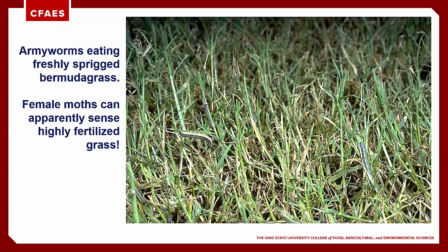African, fall, and lawn armyworms relish dining on turf that has been recently sprigged, seeded, or sodded, especially when areas have been heavily fertilized. We now suspect that adult female moths have the ability to sample the guttation water produced by turf in order to assess its nutrient value. Turf managers should be especially diligent at monitoring areas being renovated for signs of armyworm activity, and such areas can also be treated with a caterpillar preventive insecticide like chlorantraniliprole (aceleprin).